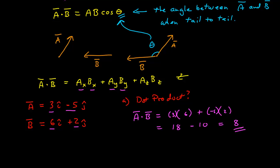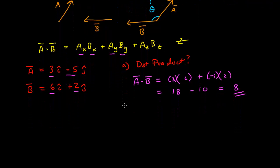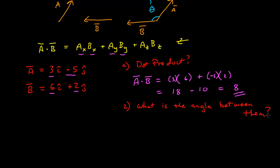Now what if I want to find the angle between them? To get at this, I would want to use the other form of the dot product: A dot B equals the magnitude of A times the magnitude of B times cosine theta, where theta is the angle between the two vectors. I already know the dot product — I've calculated that, it's 8.